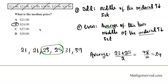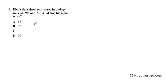Let's move on to question 40. It says, Rico's first three test scores in biology are 65, 90, and 73. What is the mean? The mean is like the average, so the mean is equal to the sum of values divided by the number of values.